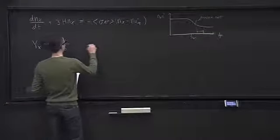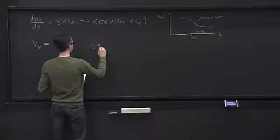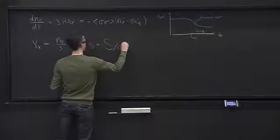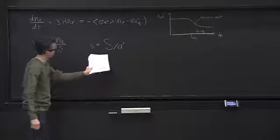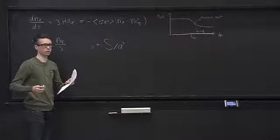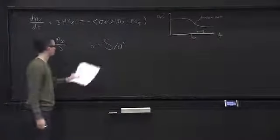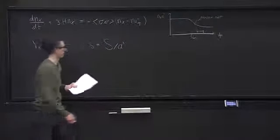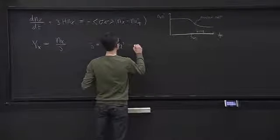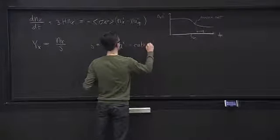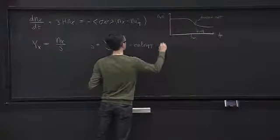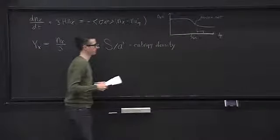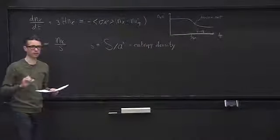The first thing we want to do is clean up the left-hand side. The left-hand side cleans up nicely if we define something called the yield, written as Y, which is n_chi over s. Here s is the entropy density — big S divided by a cubed, where big S is the total amount of entropy in a volume a cubed. So big S divided by a cubed is little s, the entropy density.